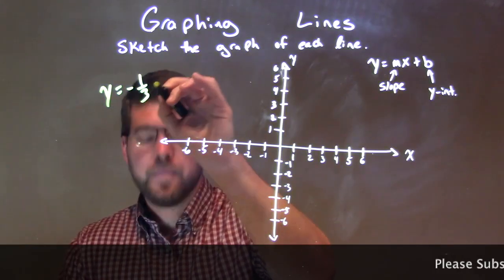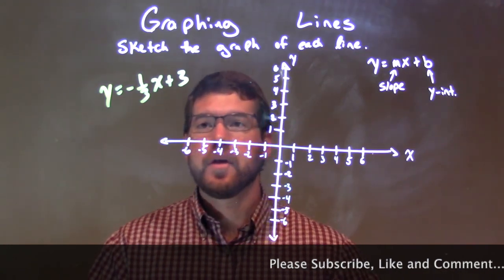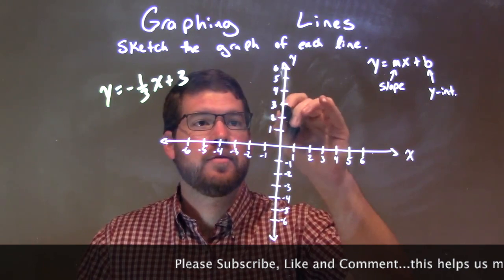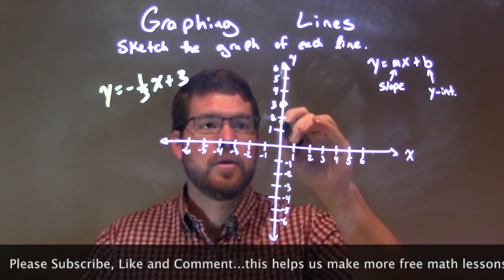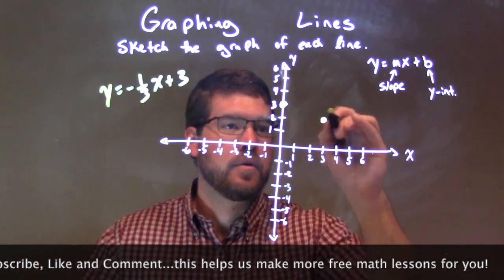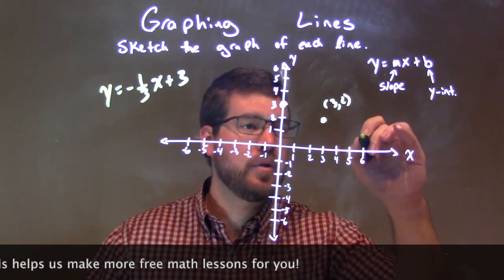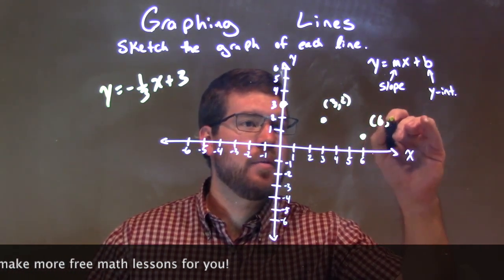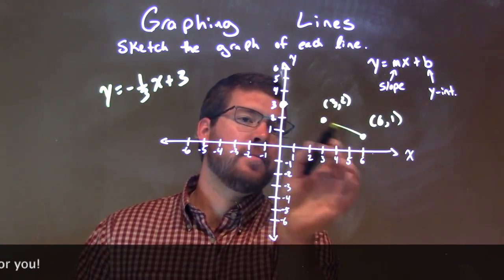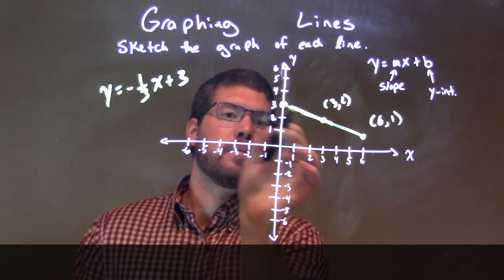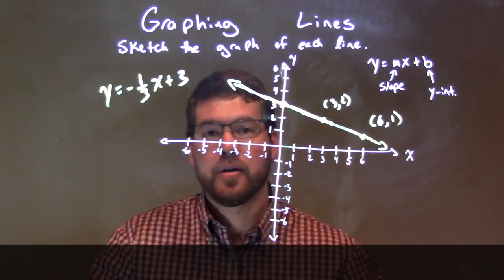y equals negative 1 third x plus 3. First thing I'm looking at is my y-intercept, which is 3 — positive 3, our b-value. They tell us we have a slope of negative 1 third, so we're going down 1 unit over 3: 1, 2, 3 units. And there we have a point at 3 comma 2. We can even do it again — from that point, down 1 unit over 3 more: 1, 2, 3 — that point is 6 comma 1. So we have a slope of negative 1 third, down 1 over 3 twice, giving us 3 points. Let's connect it — and there we have our graph.